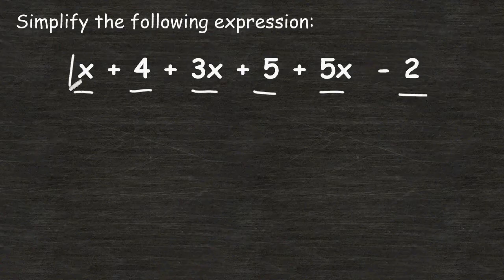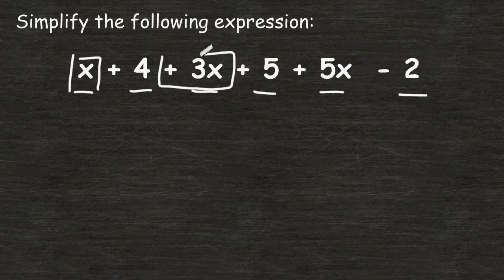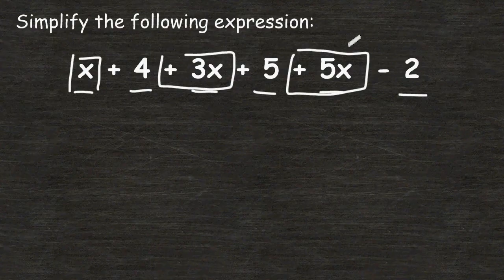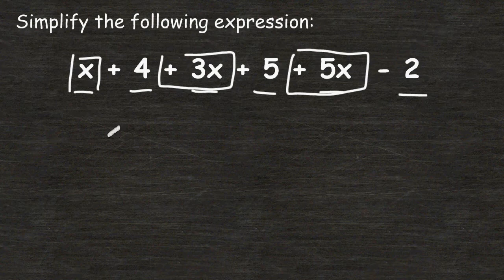Notice that this term right here, as well as this term and this term, are like terms because they all have the variable x. So we're going to combine those three terms together first. 1x plus 3x is 4x, and 4x plus 5 more x would be a total of 9x.